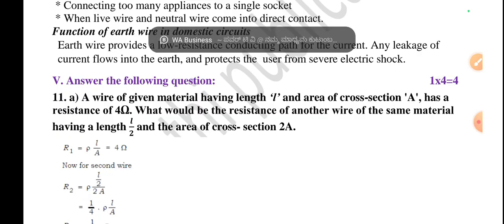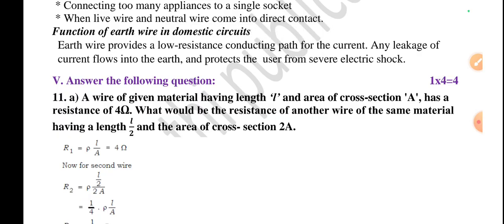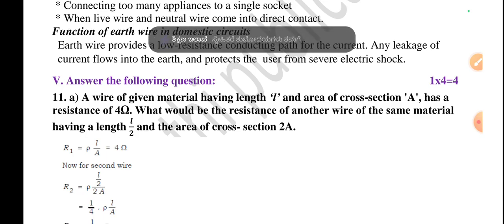Function of earth wire in domestic circuit: Earth wire provides a low resistance conducting path for current. Any leakage of current flows to the earth and protects the user from severe electric shocks. How does it make a low resistance conducting path? By making electric circuit's potential difference and earth's potential difference the same.